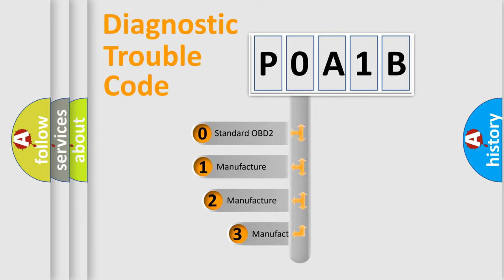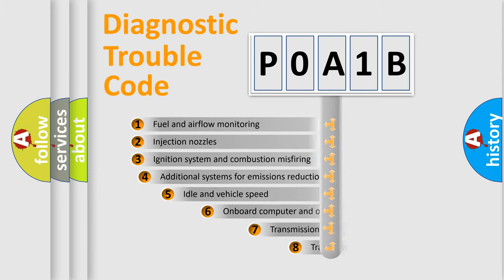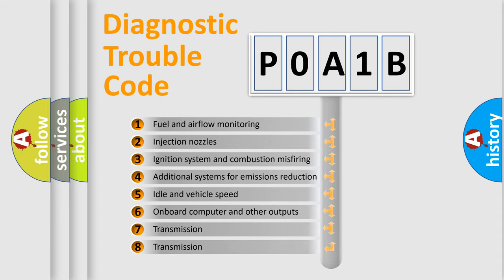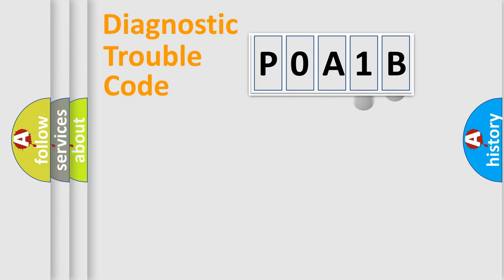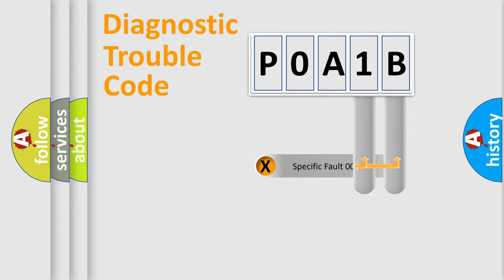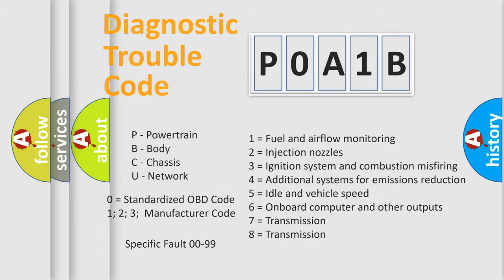If the second character is expressed as zero, it is a standardized error. In the case of numbers 1, 2, or 3, it is a more specific expression of a car-specific error. The third character specifies a subset of errors. This distribution is valid only for the standardized DTC code, and only the last two characters define the specific fault of the group. Such a division is valid only if the second character code is expressed by the number zero.